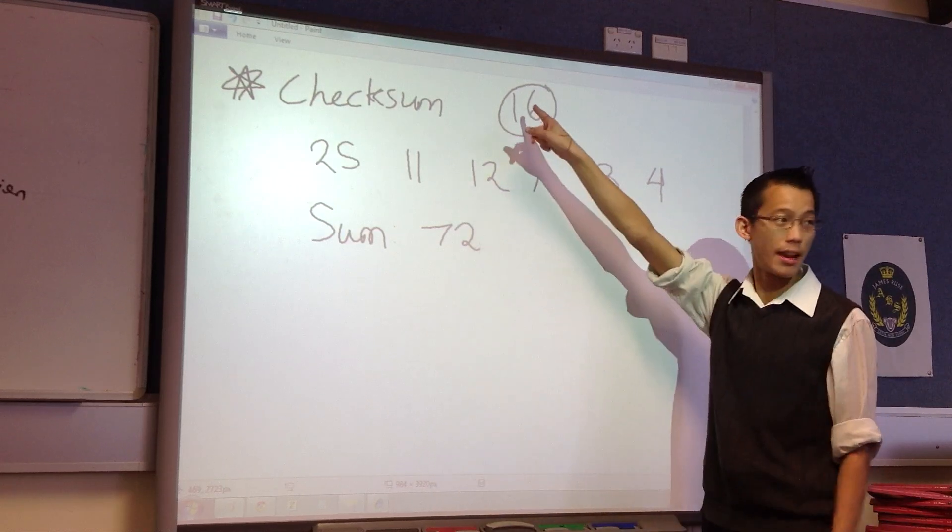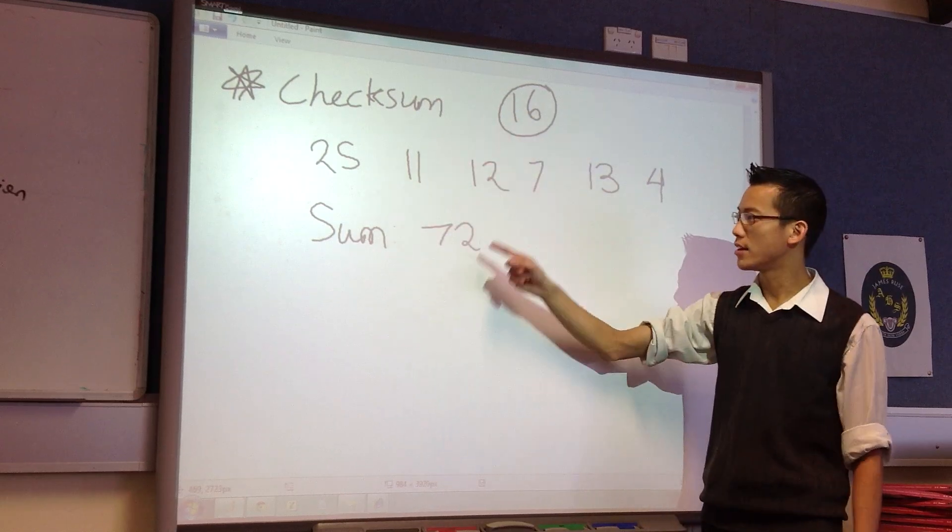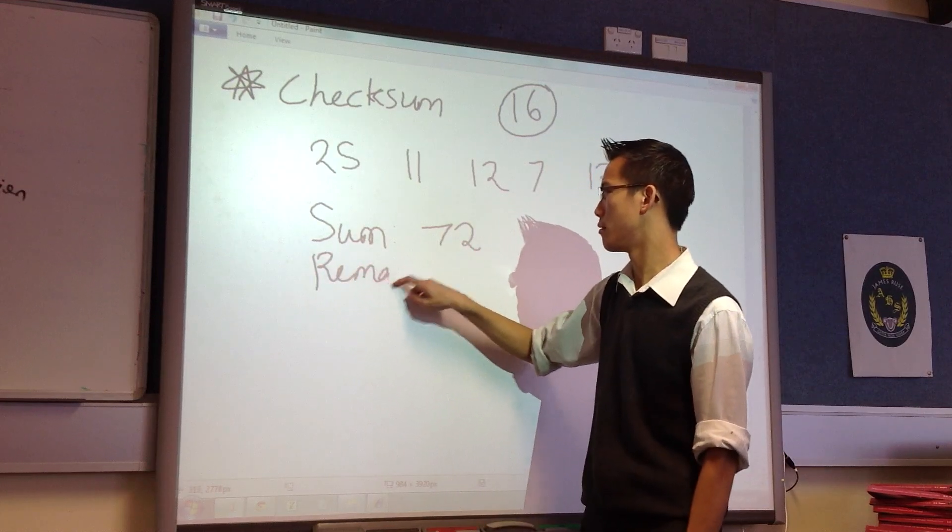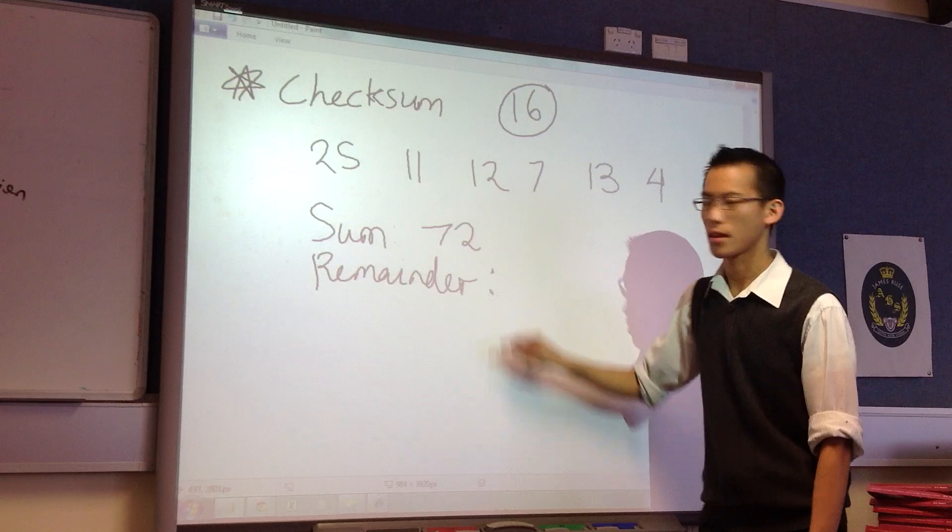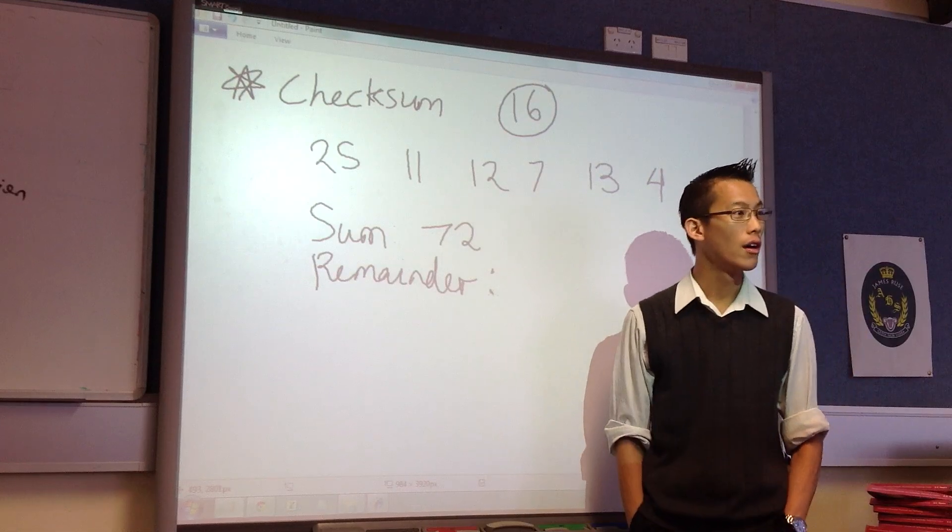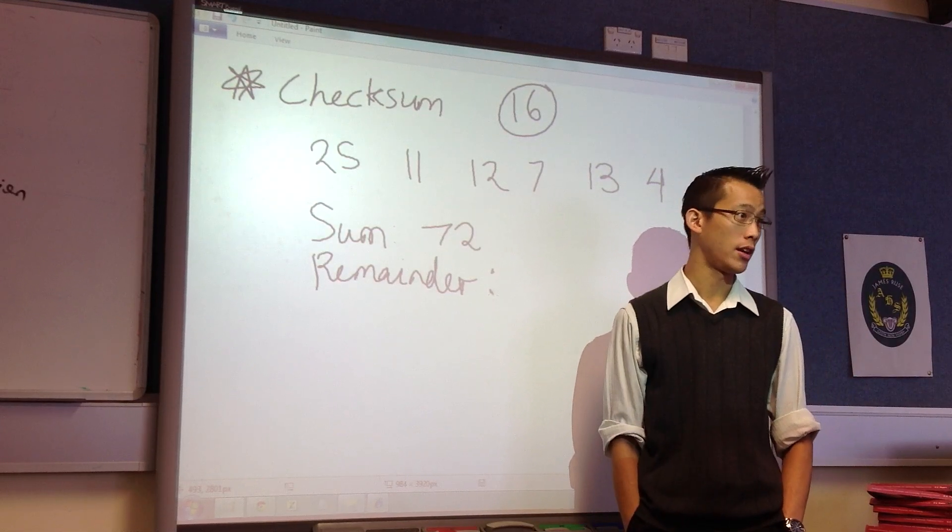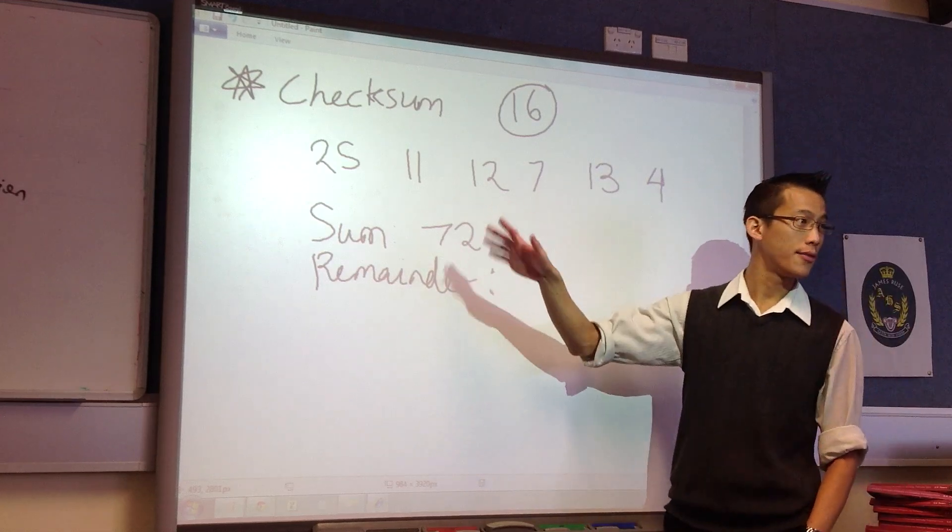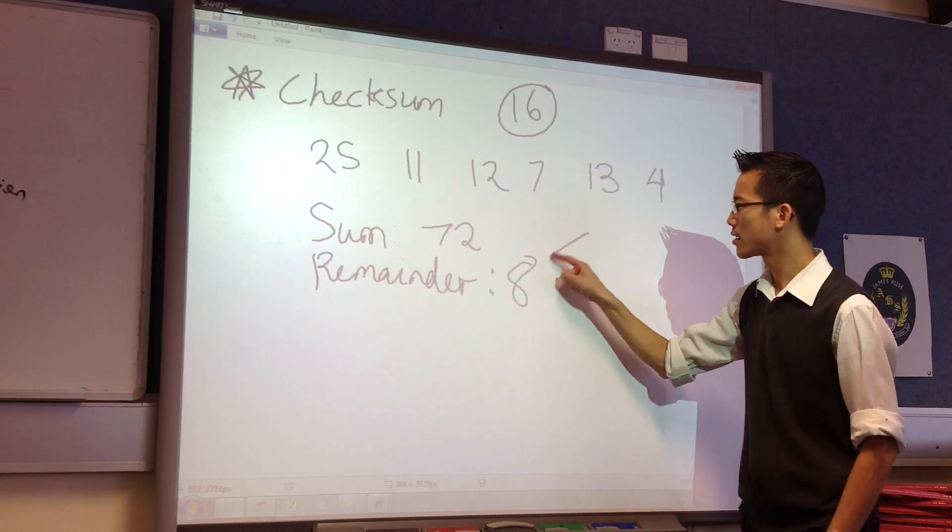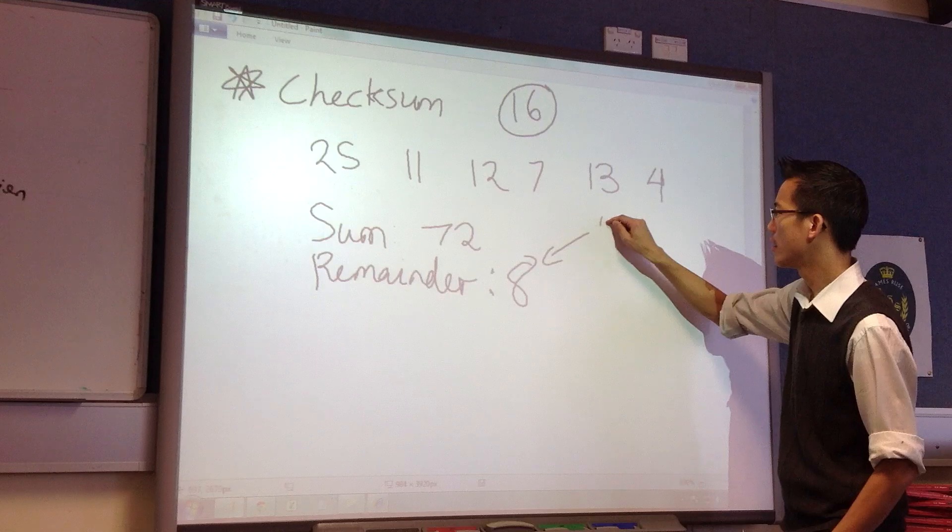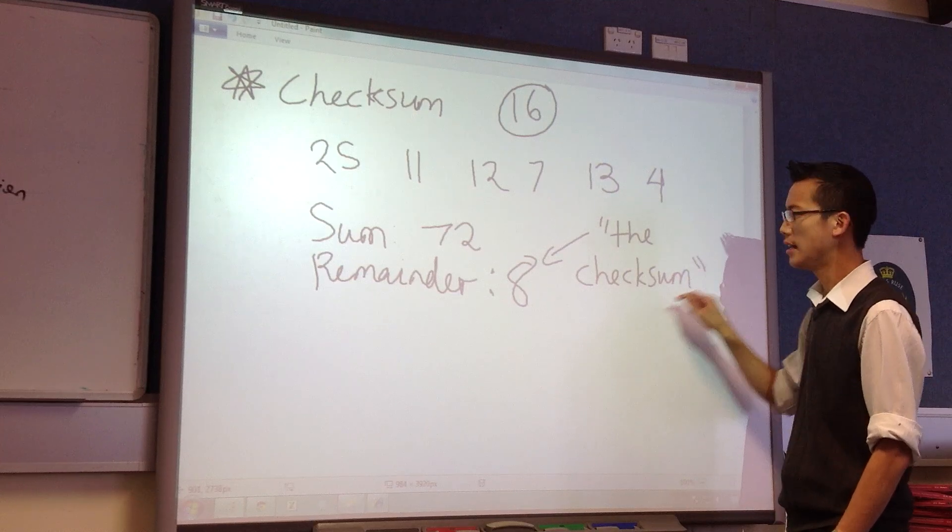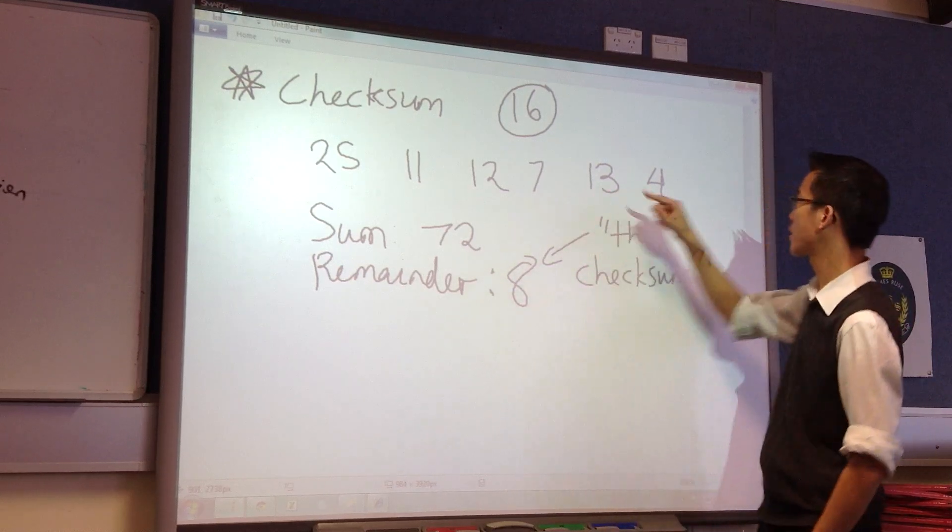The next thing you do is you look at the number that we agreed upon and you divide your sum by this. Now what I'm interested in is just the remainder. So when you divide 72 by 16, 64 is the largest multiple of 16 that can fit. So I subtract 64 and what I'm left with is a remainder of 8. So 8 is the checksum.